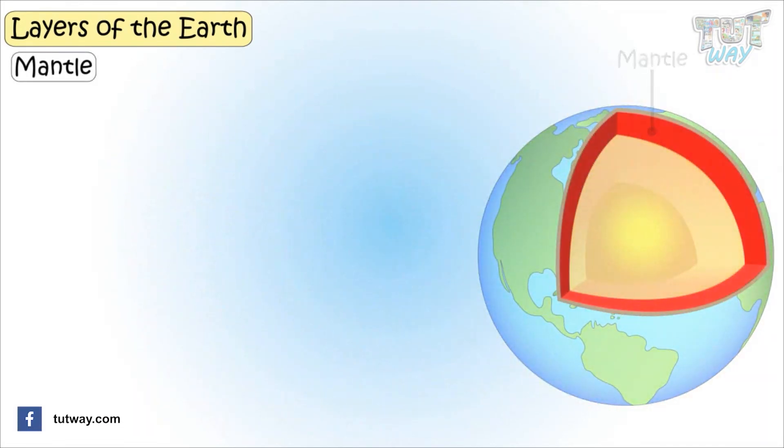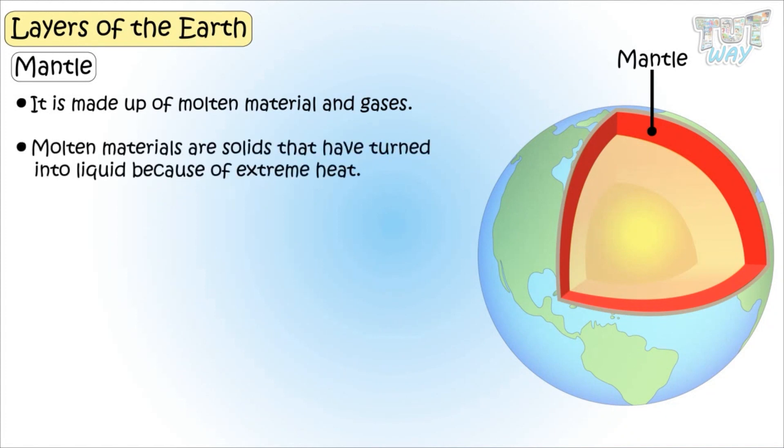The mantle, that is the outer core, is made up of molten material and gases. Molten materials are solids, like rock, that have turned into liquids because of extreme heat.